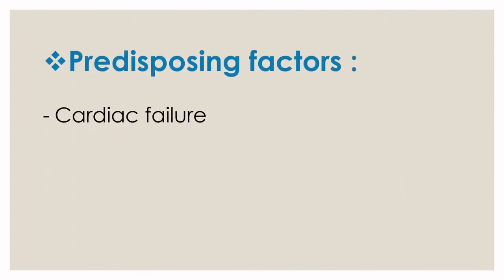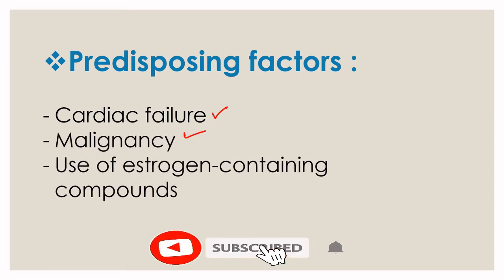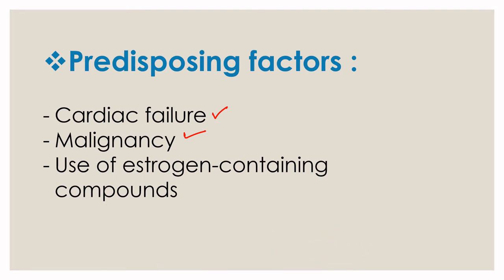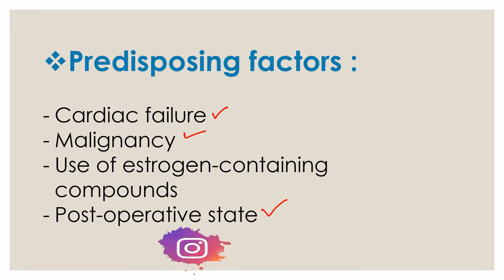Predisposing factors, meaning risk factors which can cause Deep Vein Thrombosis: first is cardiac failure, malignancy of any kind, and use of estrogen-containing compounds. When there is estrogen therapy for a long time, we can see Deep Vein Thrombosis. Post-operative state is also a predisposing factor — as a complication, we can see Deep Vein Thrombosis post-operatively.